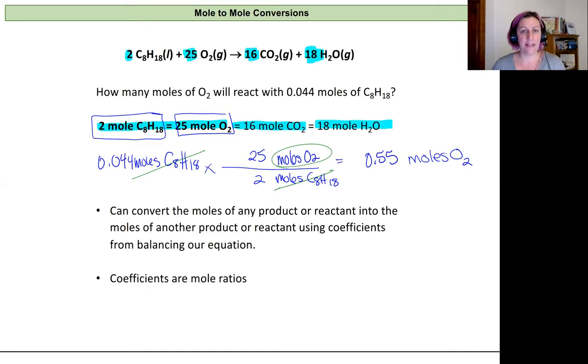The cool thing is I can convert that given 0.044 moles of octane into the amount of oxygen I need to react with it, or the amount of carbon dioxide or water that will be produced. So it's really powerful. What we're doing here is building a conversion factor from our chemical equation.